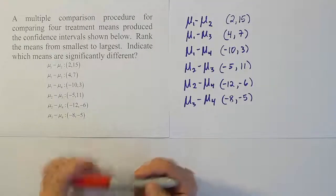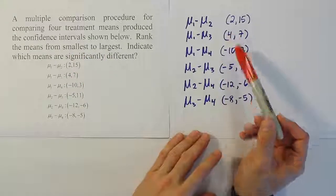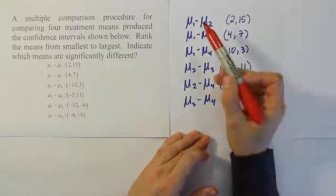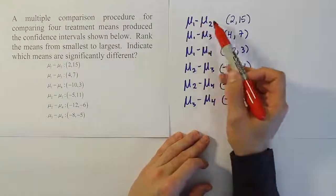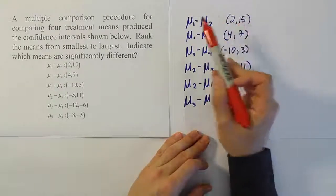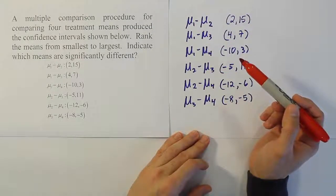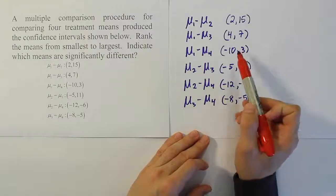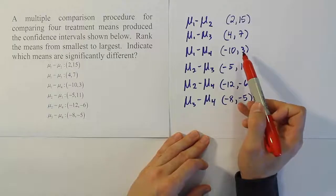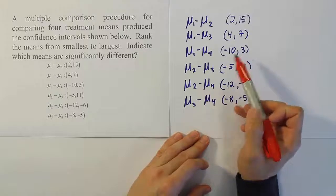We want to rank the means from smallest to largest. The simple rule we'll use is: if the interval is entirely positive, the first mean is bigger. If the interval is all negative, the second mean is bigger. If the interval contains both negative and positive values, there's no significant difference — but we'll look further to see which sample mean was larger in that scenario.